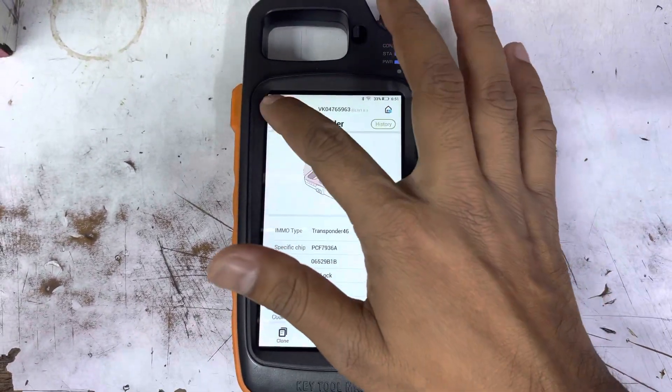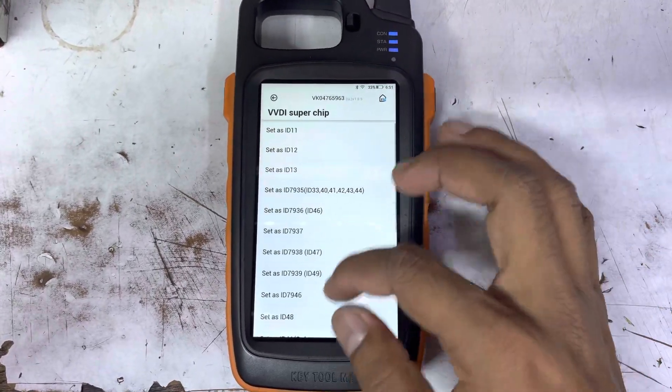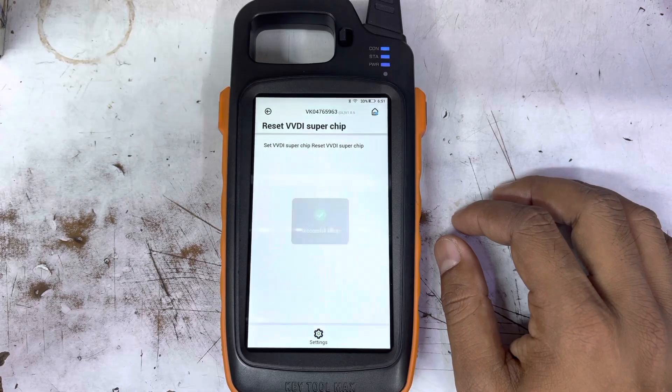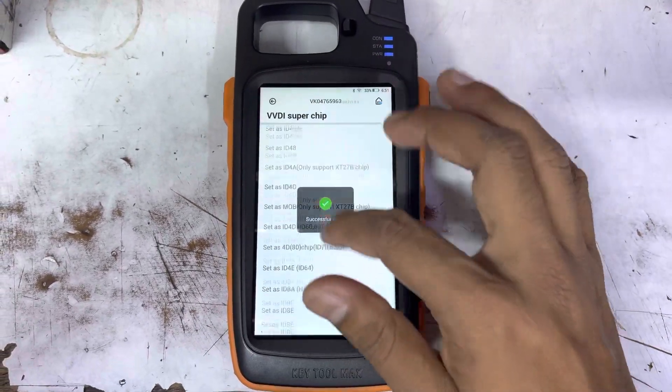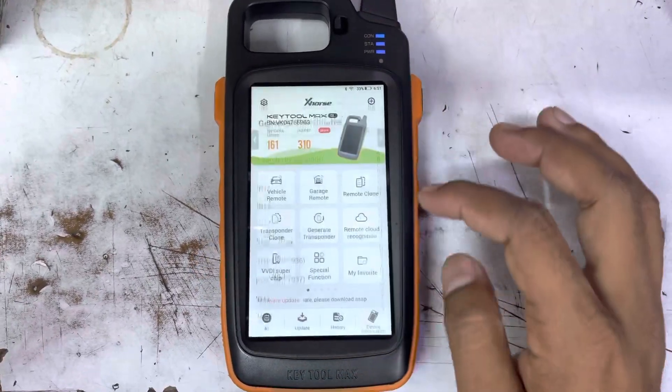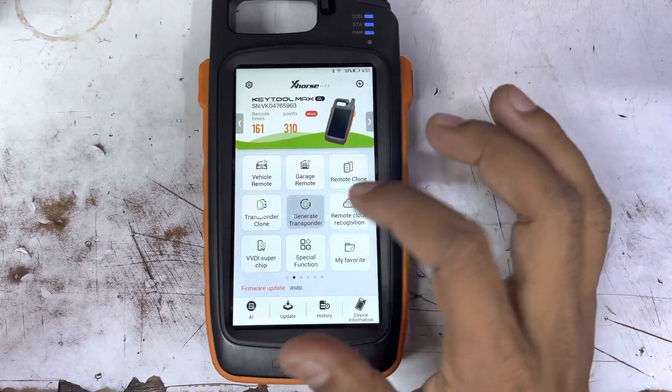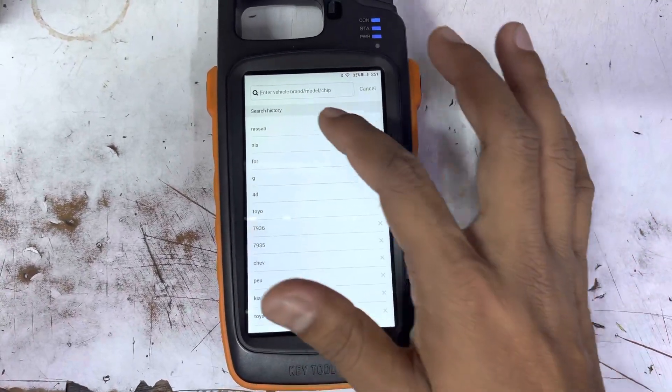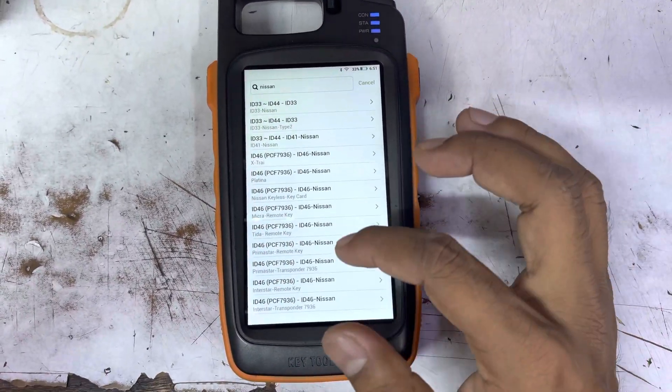It's 46 now. Okay, now again I'm going to reset. Let's try it by the vehicle on this option, generate transponder. You can choose this by setup as any car like Nissan - Nissan 49, Nissan 46.